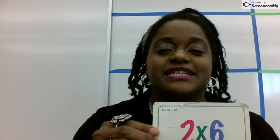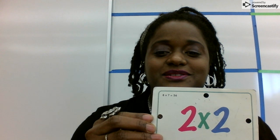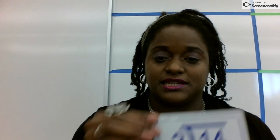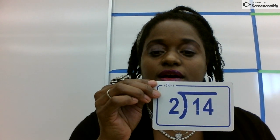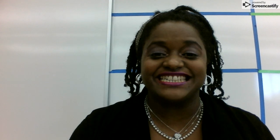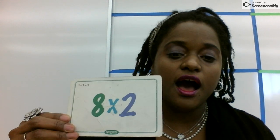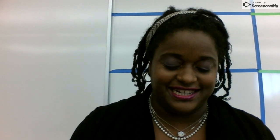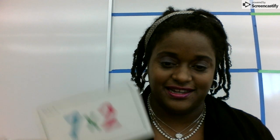What's this? 2 times 6, 12. 2 times 2, 4. What's this? 7, very good. 8 divided by 2, 4. 2 times 9, 18. I know I'm silly. 2 times 8, 16. 7 times 2, 14.